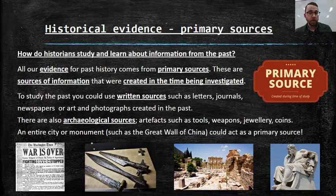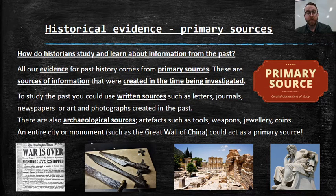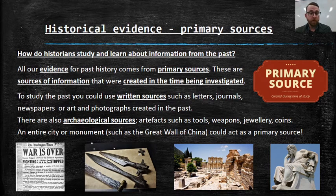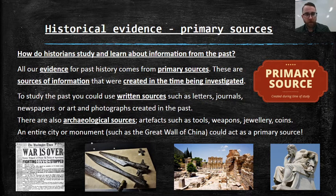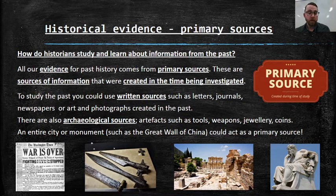Primary sources are sources of information that were created in the time being investigated. So if you're studying ancient Greece, anything that was made in ancient Greece — a sword, a building, a cup — that's a primary source. To study the past, you can use written sources: letters from a soldier in World War I, journals from someone sailing to Australia on Captain Cook's fleet, or newspaper articles. You could also use art — paintings count as primary sources — and photographs from the past.